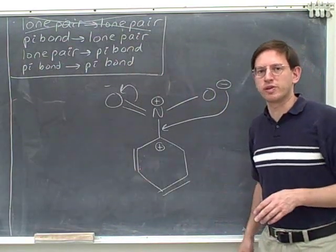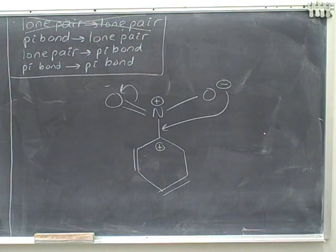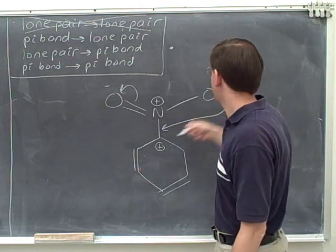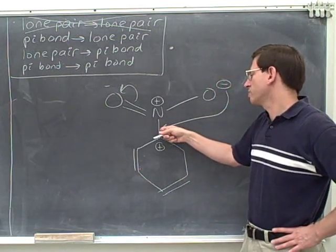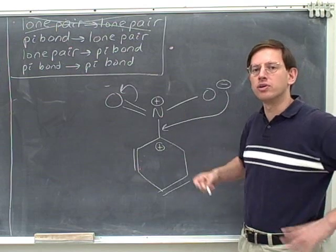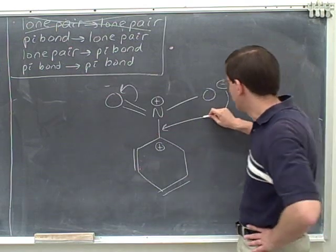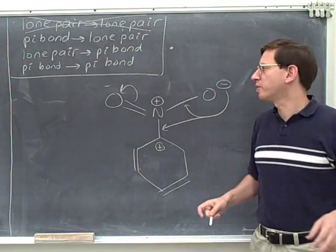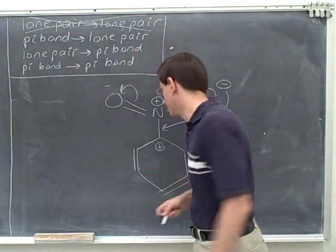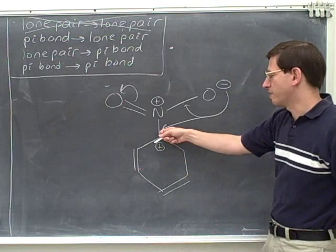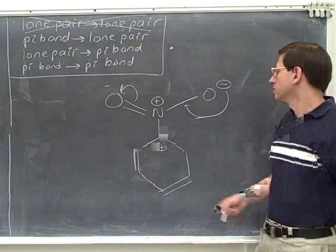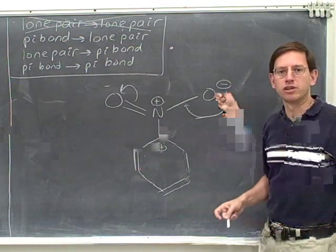Do these arrows satisfy the as close as possible principle? This arrow is fine, but here we're taking a lone pair and making a pi bond. But is this the closest possible pi bond that we could make to the original lone pair? No. If we put the pi bond here, it would clearly be closer to the original lone pair. So we're supposed to put the new pi bond as close as possible to the original lone pair. This arrow is making too big of a jump — I'm going to erase this head. Instead, you'd want to put the new pi bond here, closer to the original lone pair.